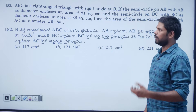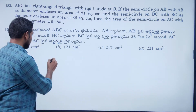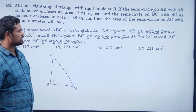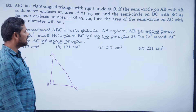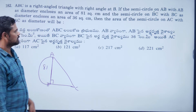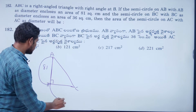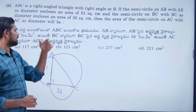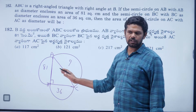This is a right-angle triangle with the right angle at B. If the semicircle on AB with AB as diameter encloses an area of 81 square centimetres, and the semicircle on BC encloses an area of 36 square centimetres, then what is the area of the semicircle on AC? Using the right-angle triangle property: side² + side² = hypotenuse².